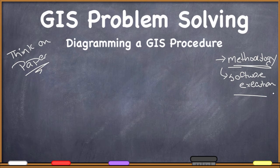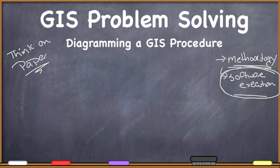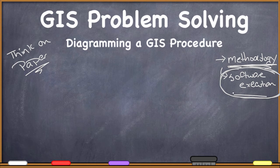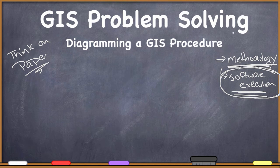Many GIS software packages can be very complex, and people often focus heavily on software execution — getting the software to do exactly what they want. But by far the more important thing is to focus on getting the methodology right. Because we can go on Google and look up how to get software to do something specific. But if we don't know what we need to do, we're never going to solve the problem. When I talk about learning to solve problems in GIS, I'm really focused on this methodology.